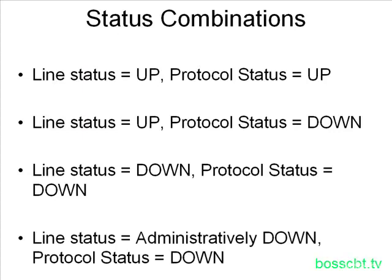Finally, we have line status administratively down and protocol status down. Here, somebody went into the interface and actually disabled it. There may not be a problem at the physical level or data link protocol level, but we don't know because it's been disabled. To see how it would function if enabled, we would have to enable it and then see how the status codes change.